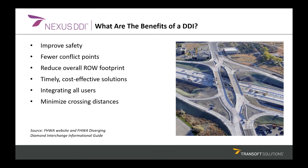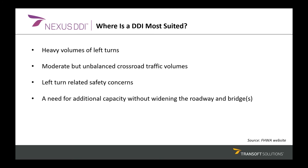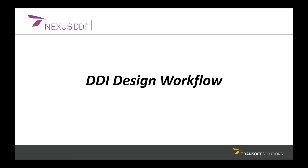A well-designed DDI also brings better sight distance at turns and makes wrong-way entries to ramps extremely difficult for drivers. At this point, we need to talk about when a DDI should be designed. Diverging diamond interchanges are always worth considering as an alternative, and are particularly recommended if a project location has heavy volume left turns onto and off of ramps, moderate but unbalanced crossroad traffic volumes, safety concerns regarding left turns at interchange intersections, or a need for additional capacity without widening the roadway or existing bridge.